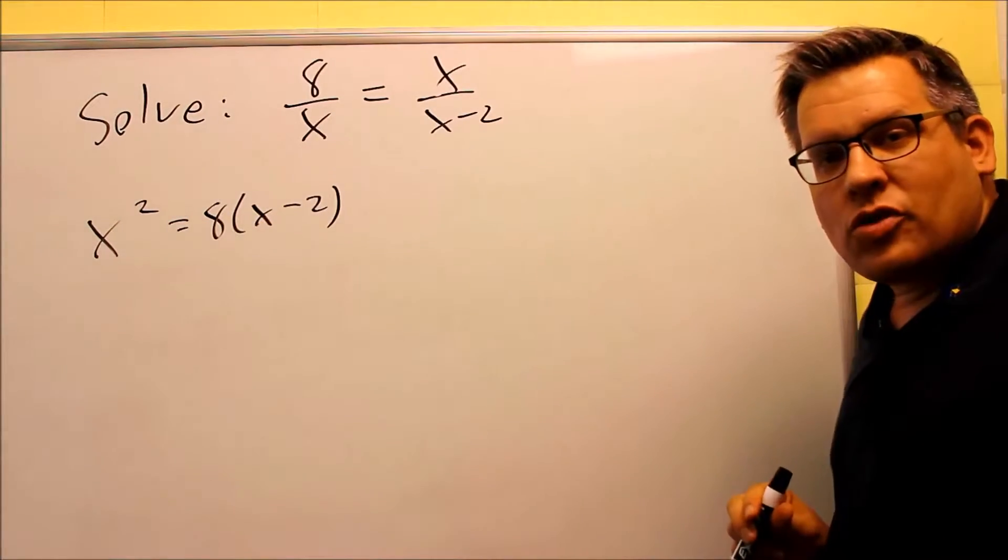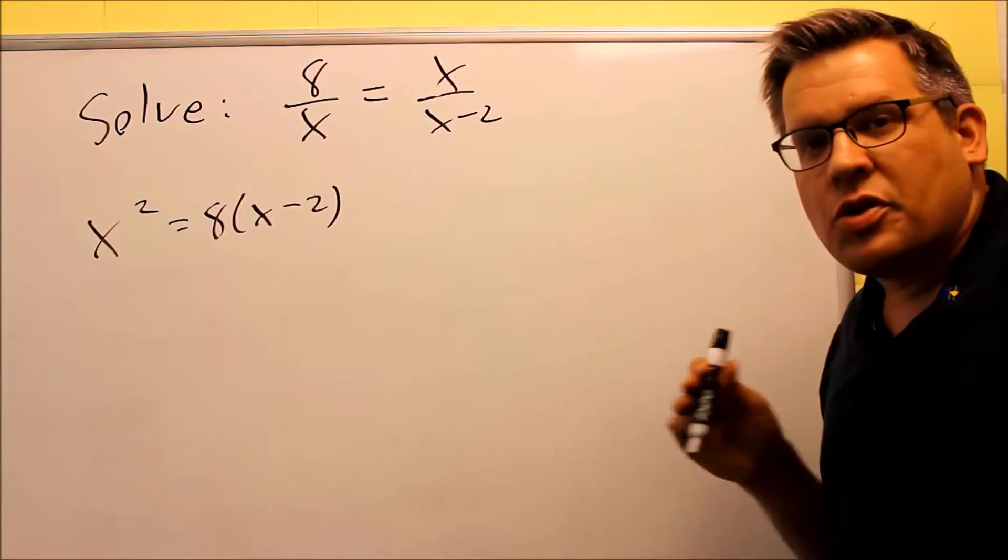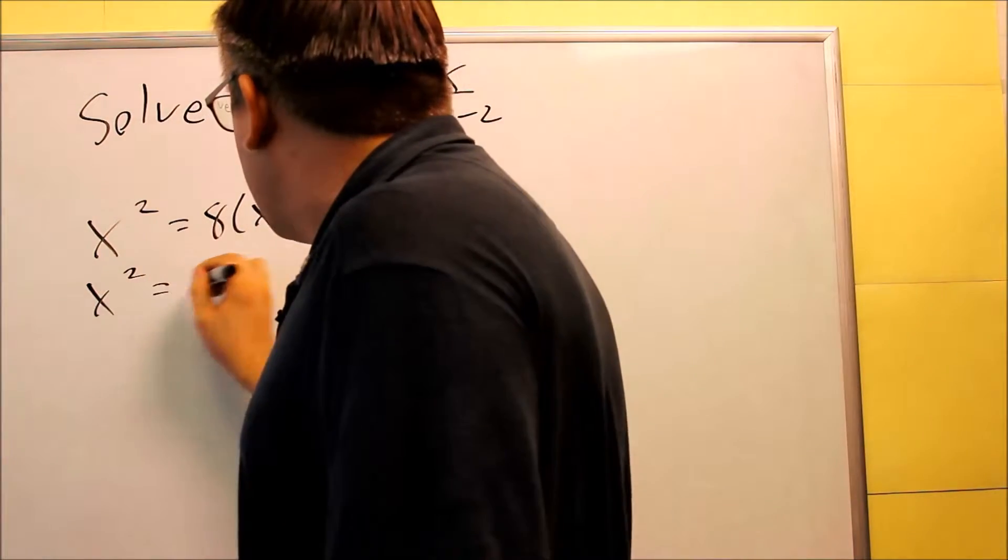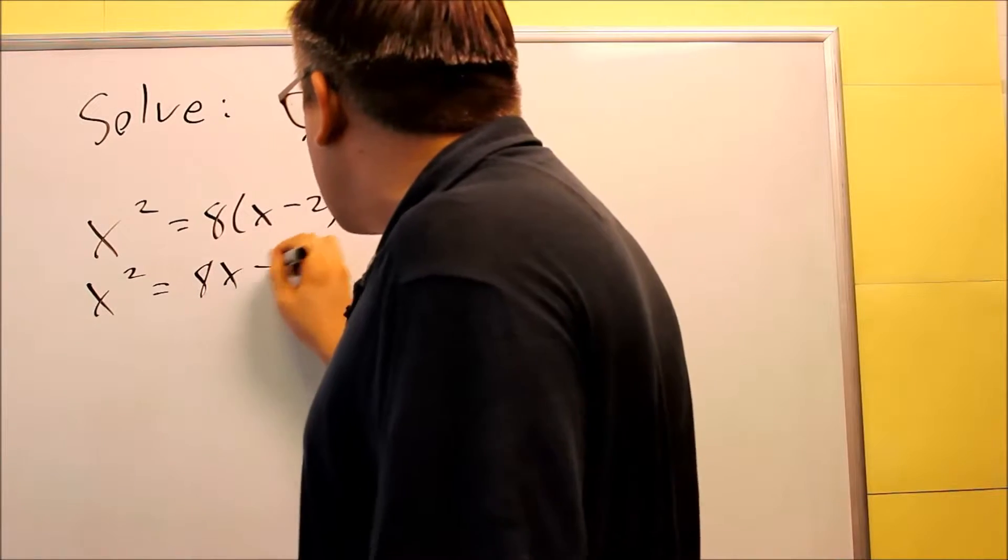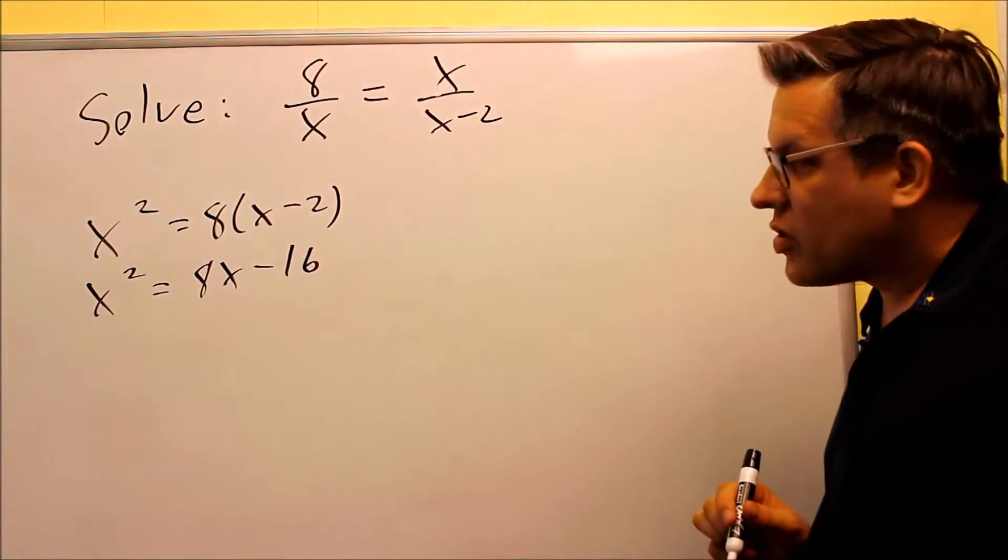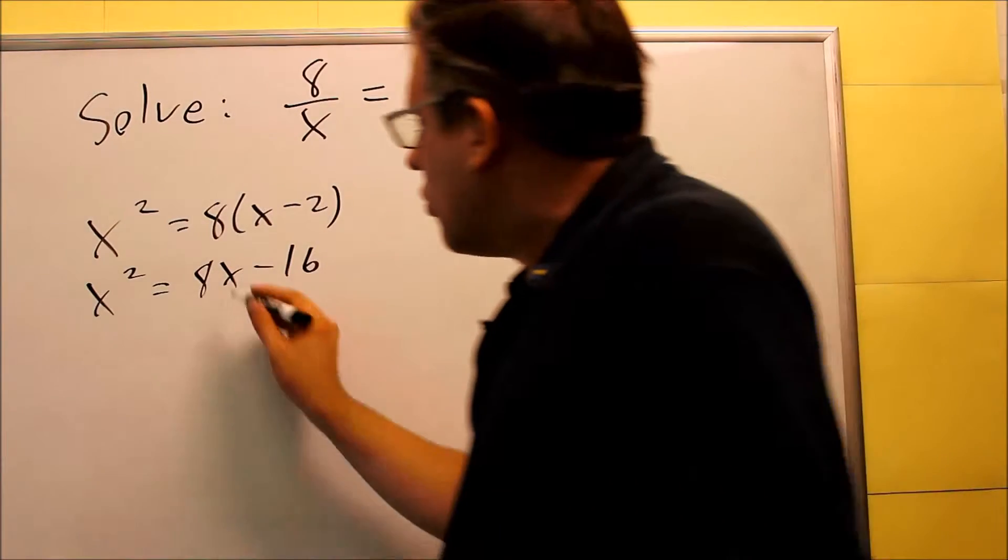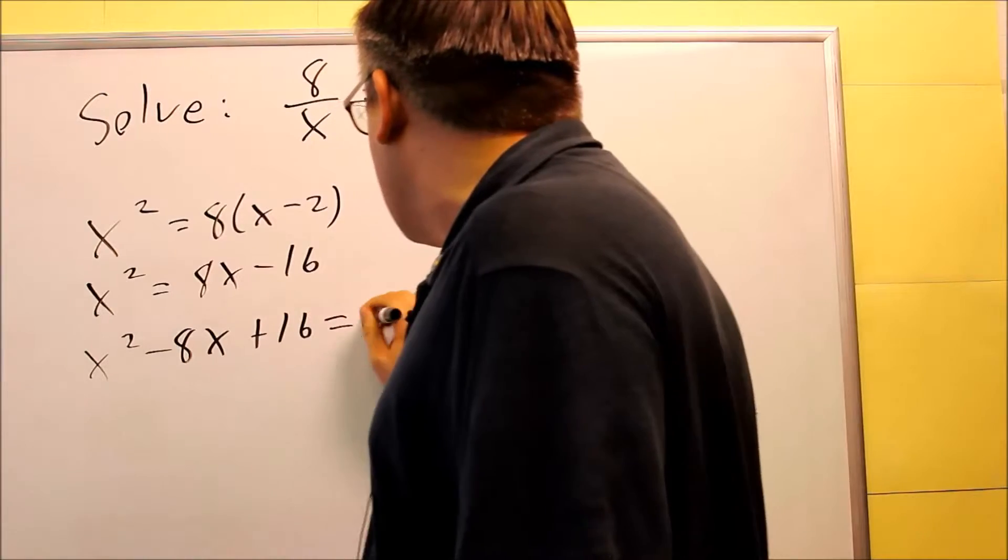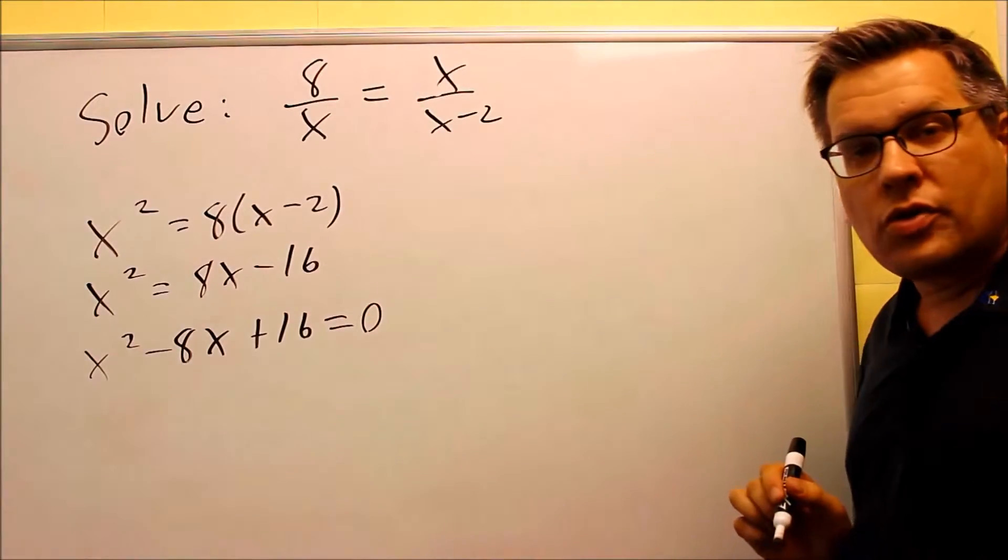To solve these kind of problems, you need to get them equal to 0 and then do factoring. So I'm going to do X squared equals, and then I get 8X minus 16. We need to get it equal to 0 before we solve this. So when we move it across, you get X squared minus 8X plus 16. That's all going to equal 0.